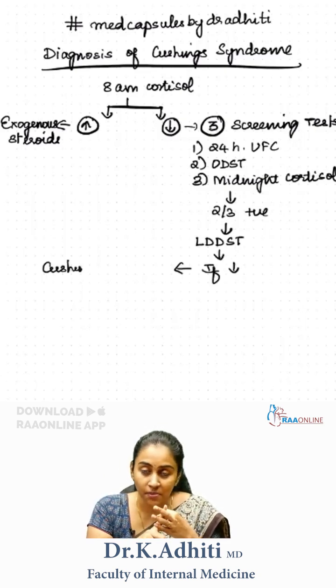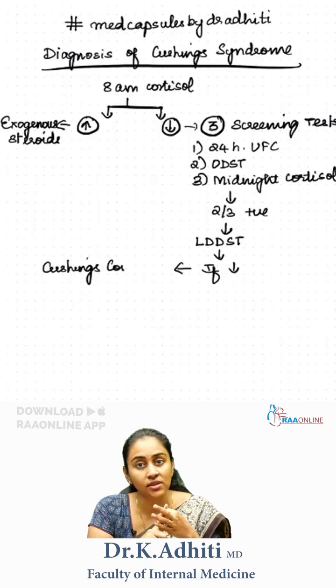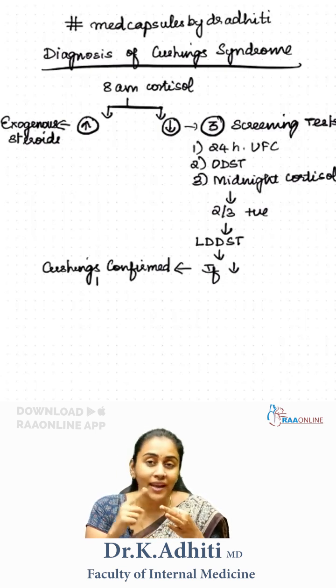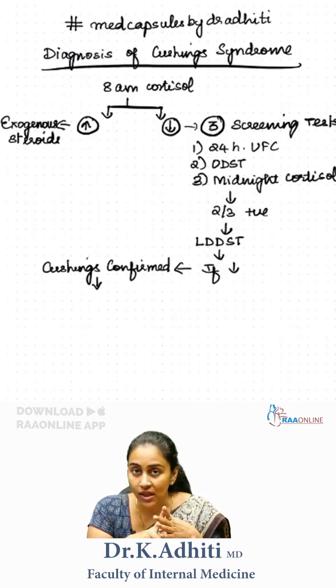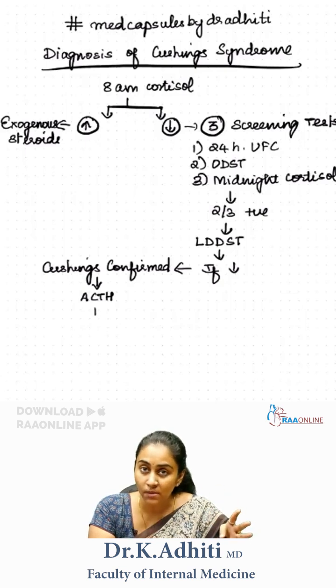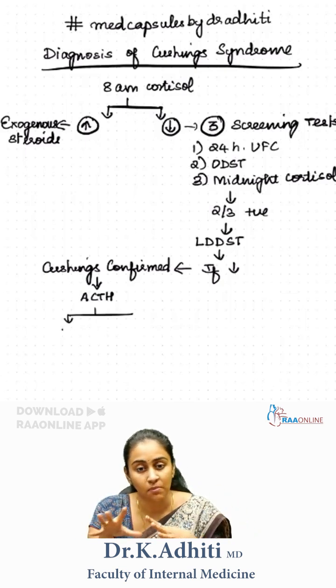If this is suppressed, then Cushing's is going to be confirmed. Next, we need to look at the ACTH to determine if we are dealing with an ACTH-dependent or an independent Cushing's.